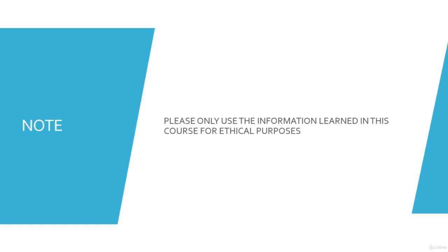We're going to learn malicious things. Please only use the information learned in this course for ethical purposes. Do not attack your neighbors. Do not attack anybody that you do not have explicit permission to do so. You can and will get into trouble for doing that. So with that out of the way, let's talk briefly about the five stages of ethical hacking.